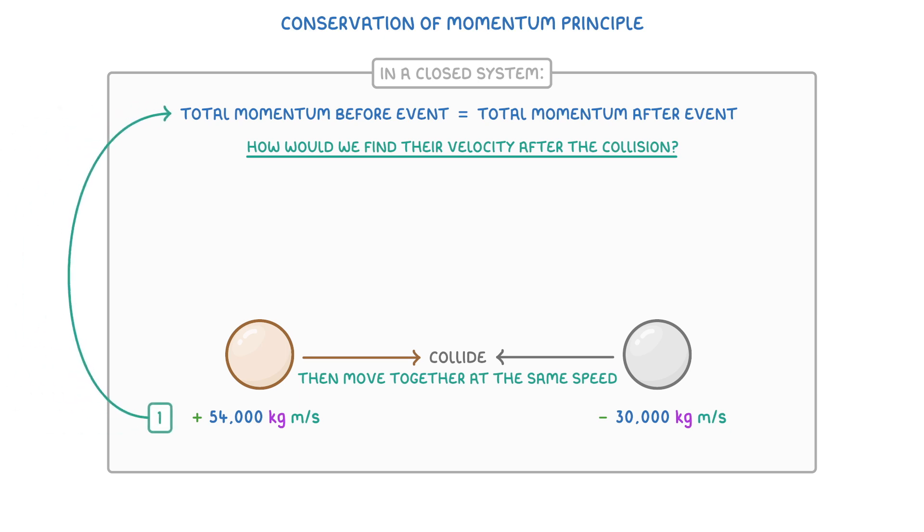Well, the first thing we need to do is find their total momentum before their collision, which we can do by adding together the dinosaur's and the car's momentums. So 54,000 plus negative 30,000, which gives us positive 24,000 kg m per second.